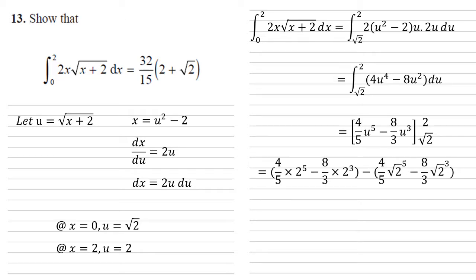So now we're going to put those bounds in. So our first bracket is our answer, but with the u replaced with 2. Take away the second bracket where our u is replaced with root 2.